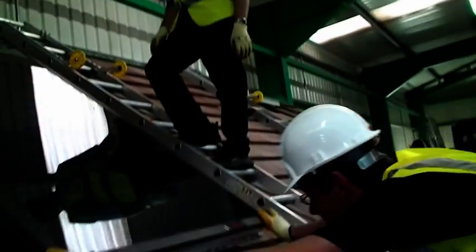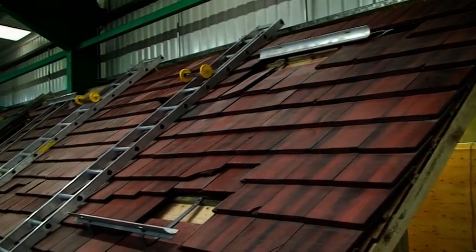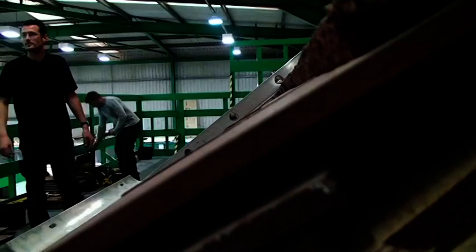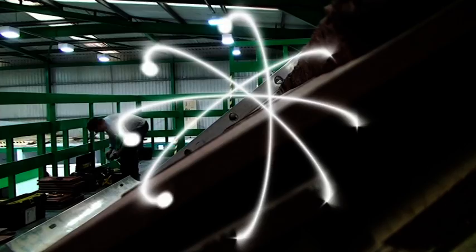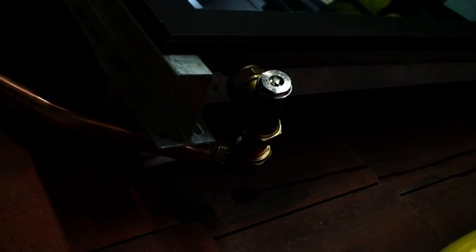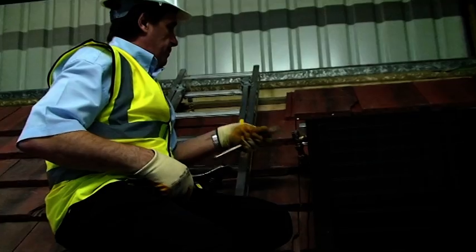On the solar course they will actually install a complete system. Once they've had the theory within the classroom base they will come into the workshop and they will completely strip a roof, fit the brackets, fit the panel and then pipe it down to a solar station and then do a dummy run on it to show how it is completely commissioned.